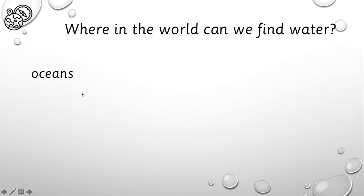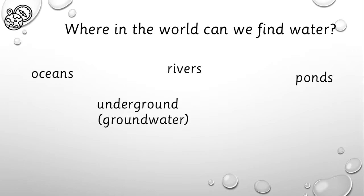One place, one of the biggest places, is in the oceans. And we know this because we live quite close to the Indian Ocean. Another place we can find water is in rivers. Perhaps you've been to the Congo River. Another place we can find water is in ponds. These are small areas of fresh water. Another place we can find water is underground. This happens when rain or other precipitation falls down to the Earth and then seeps through the rock and soil layers and pools underground. We call this groundwater.